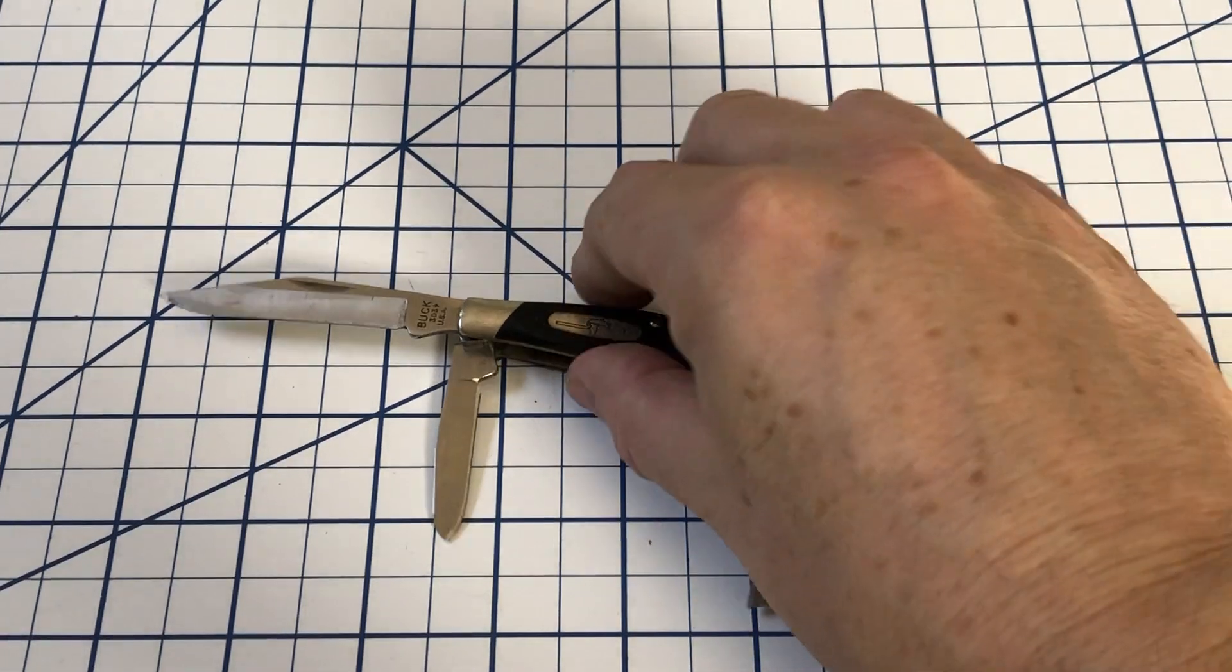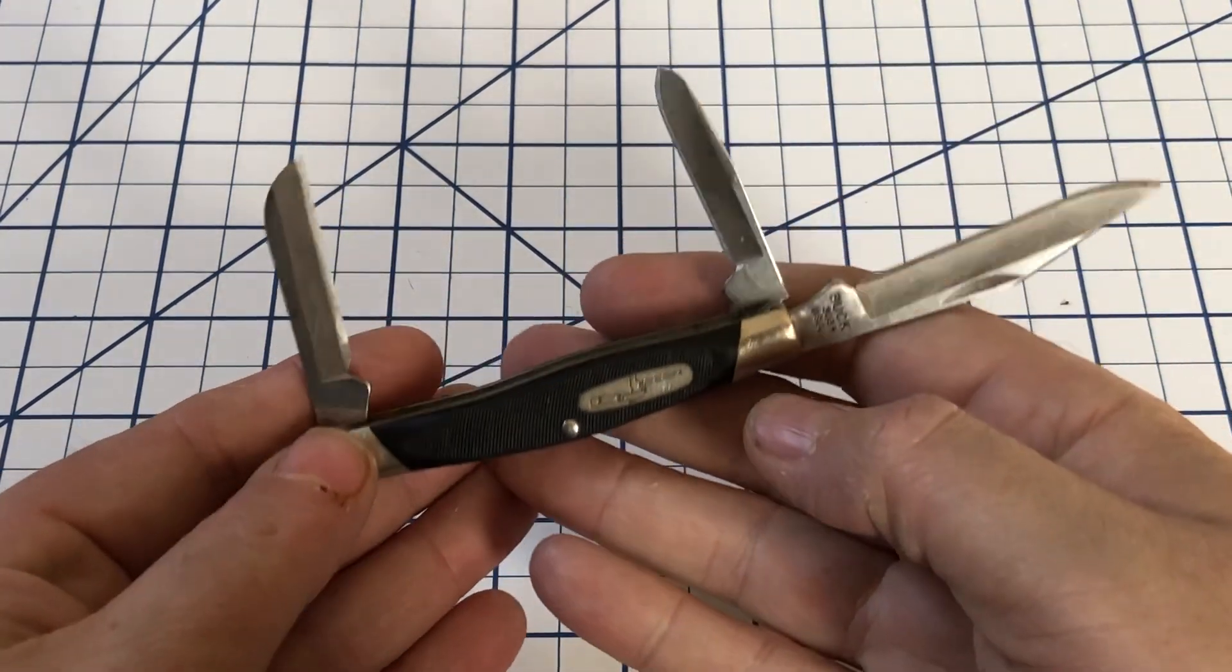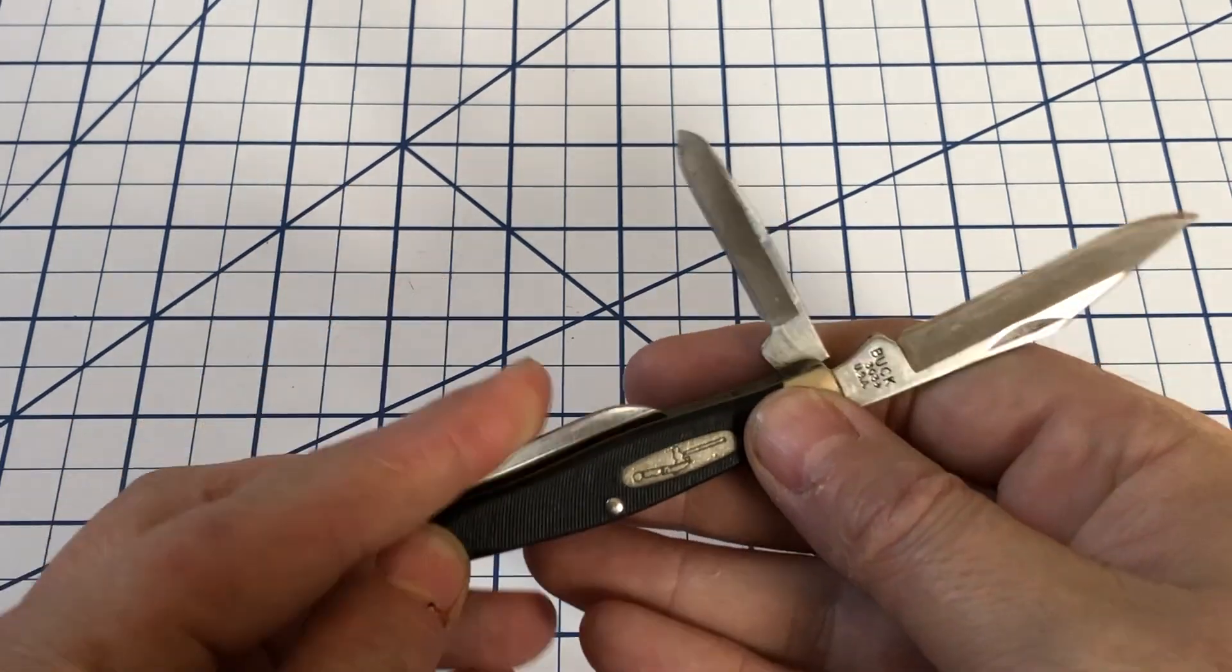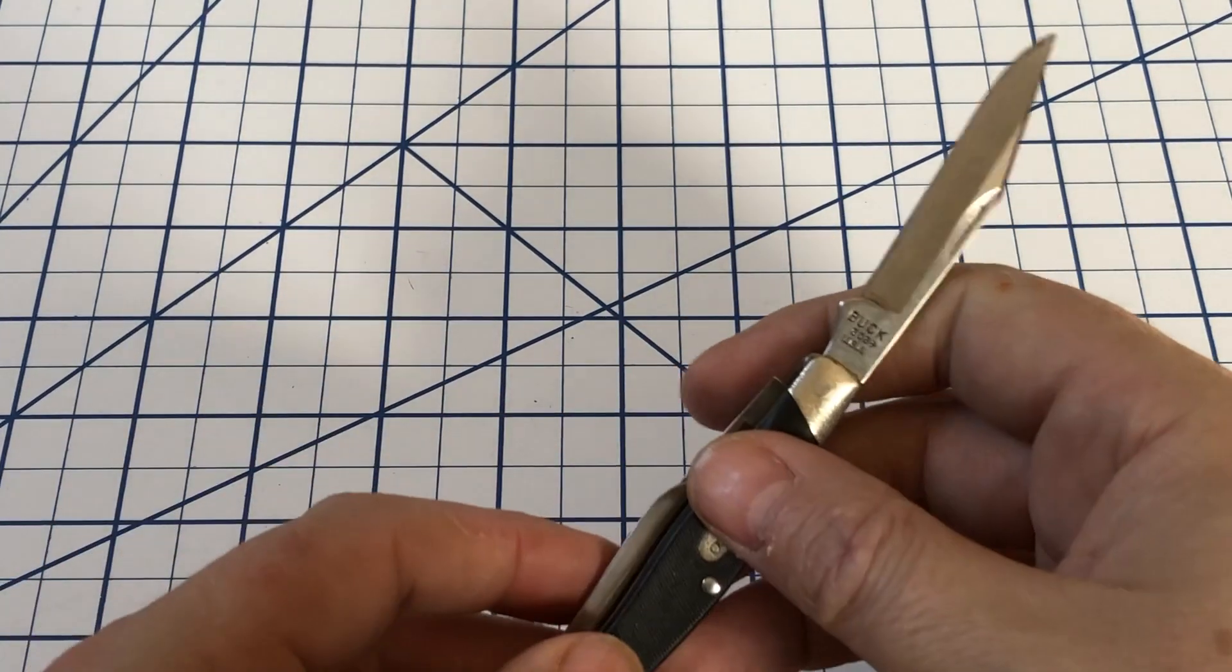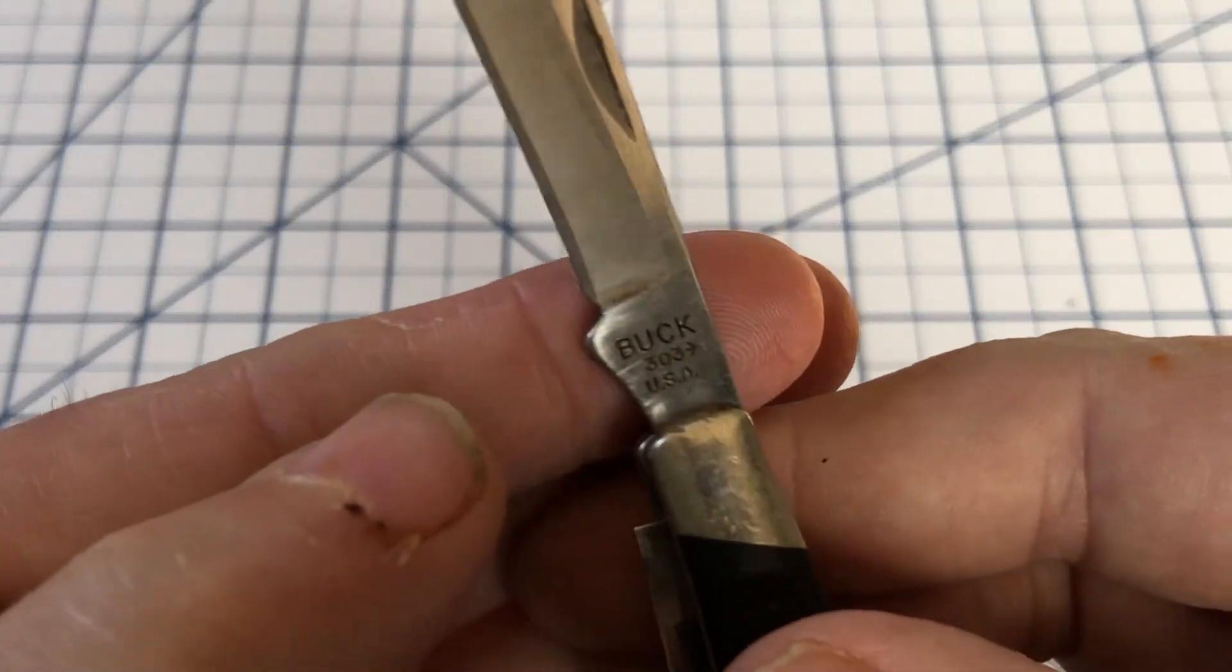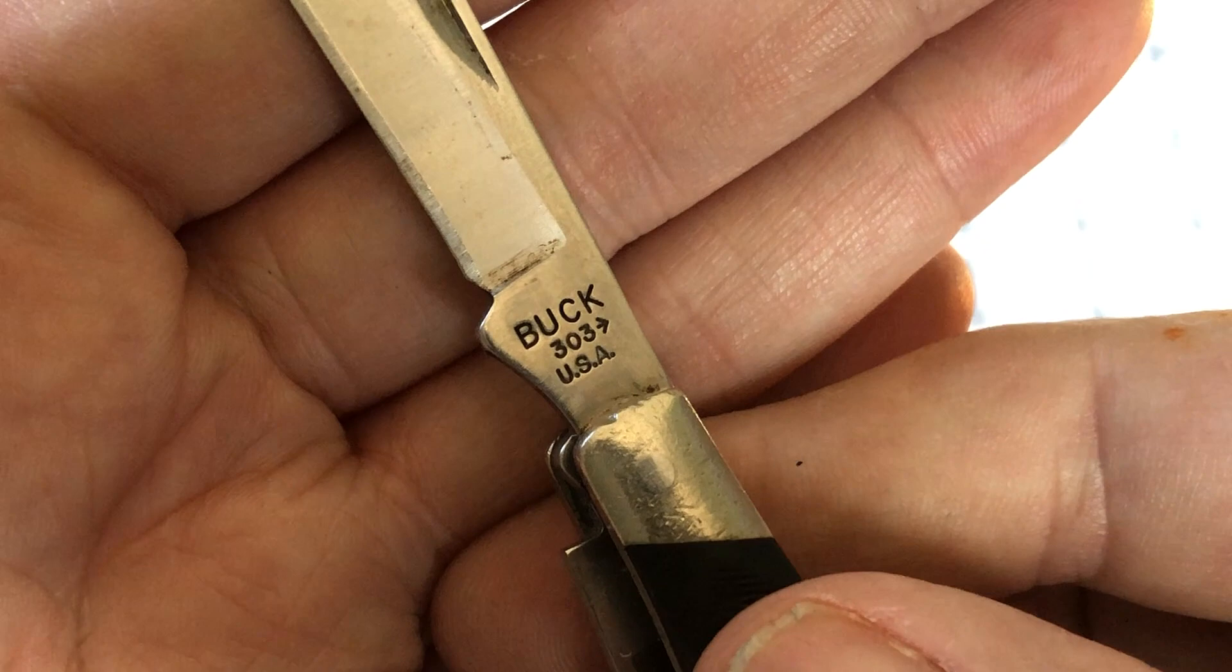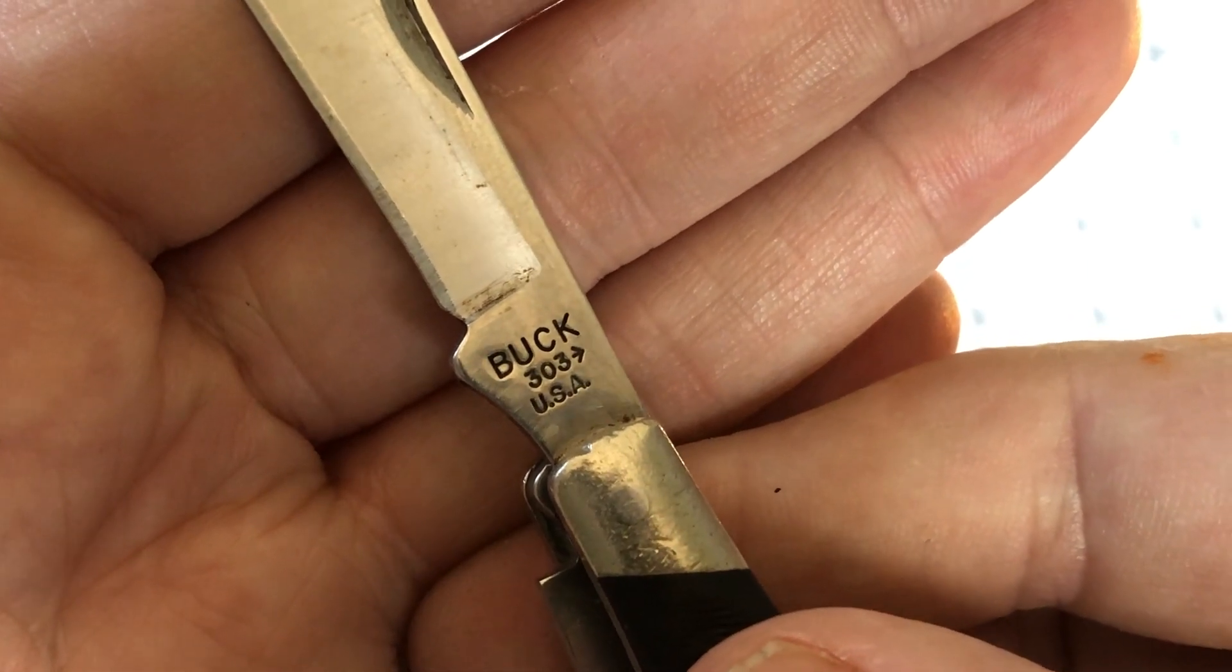This is the Buck 303 Cadet. It's a Stockman style knife. Looking at the tang stamp and the Buck dating system indicates that this was made in 2009.